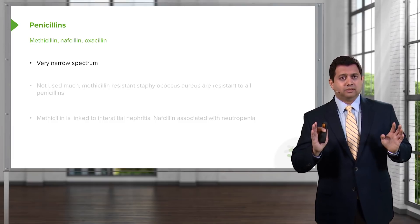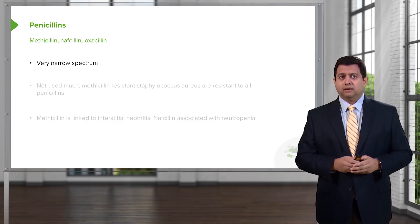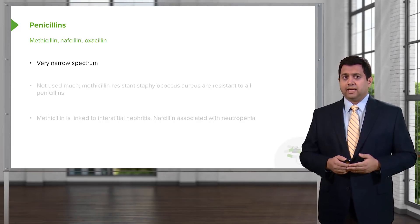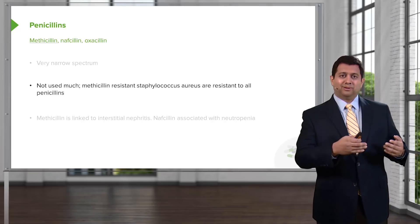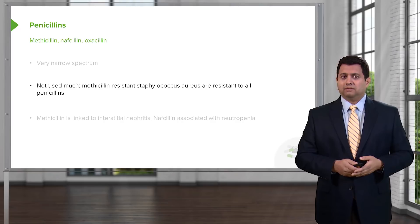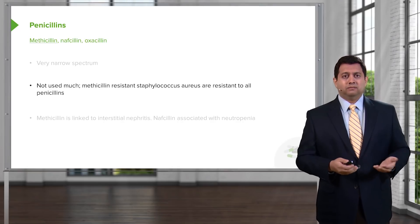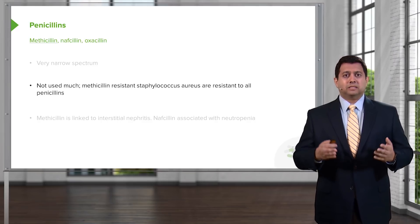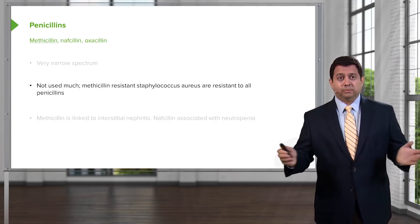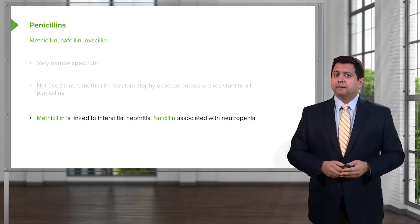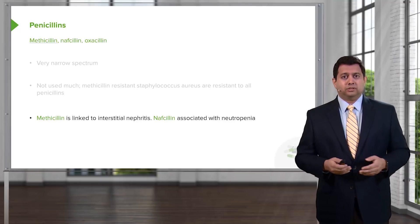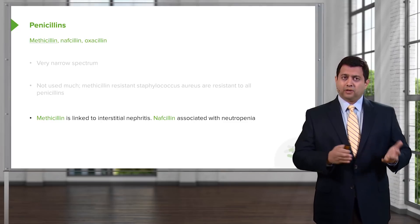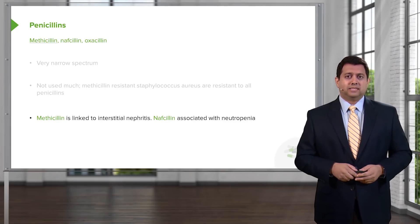Some narrow-spectrum penicillins include methicillin, nafcillin, and oxacillin. They're not used much anymore. Methicillin-resistant Staphylococcus has essentially taken methicillin off the table because MRSA strains are resistant to all penicillins. Methicillin is also linked to interstitial nephritis, and nafcillin is associated with neutropenia. So these agents are falling out of favor, but they still show up on our susceptibility charts.